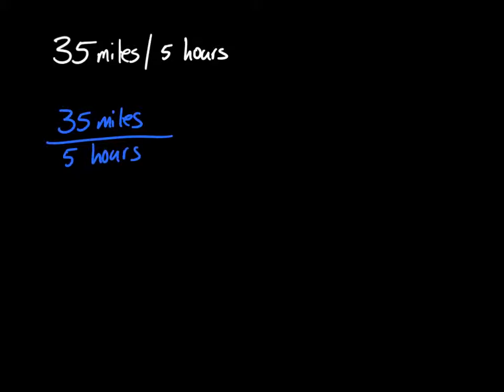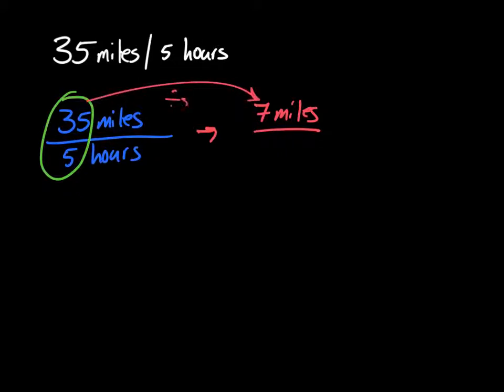And then really what we're doing is we're just looking at the numbers here and we're simplifying those. So I know that 35 divided by 5 is 7, so then I'm going to end up with 7 miles. And then I divided 35 by 5 in order to get here. So I need to do the same. And remember, I want my denominator to be 1 anyway. So then I have 1 hour.